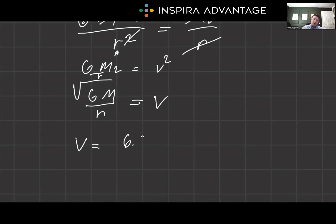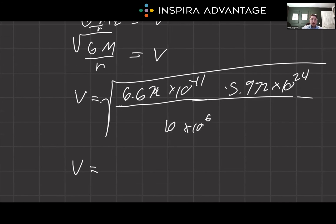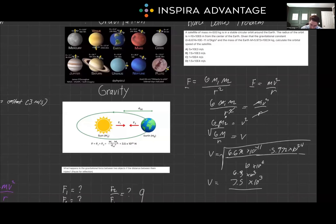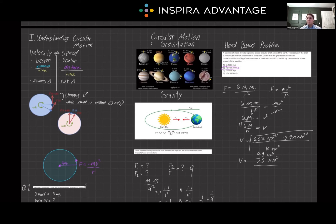Velocity equals the square root of (6.674 times 10 to the negative 11 times 5.972 times 10 to the 24) divided by (10 times 10 to the 6). Solving this out, we technically get 6.3 times 10 to the 3rd, but 7.5 times 10 to the 3rd meters per second is the closest answer from our list of options — Answer B. On the MCAT, you'll need to apply these principles to solve physics problems and appreciate their medical relevance, like understanding how centrifuges separate blood components. Hopefully this video helps you get a few more points on that tough chem-phys section. Thank you for watching our video on circular motion and gravitation — see you next time.